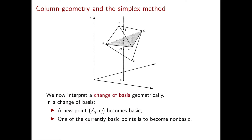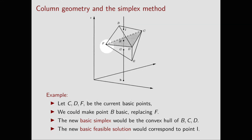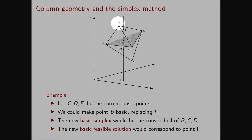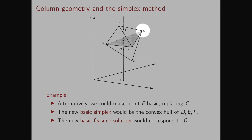Now let's talk about change of basis. In a change of basis, a new point aj,cj becomes basic and one of the current basic points becomes non-basic. For example, if our current basic points are c, d, f and we want b to replace f in the basis, the new basic simplex will be the convex hull of b, c, and d. The new basic feasible solution is the intersection of this triangle with the requirement line, which is the point i. Alternatively, starting from c, d, f, we could make point e basic by replacing c, giving the new basic simplex d, e, f with corresponding basic feasible solution at point g.